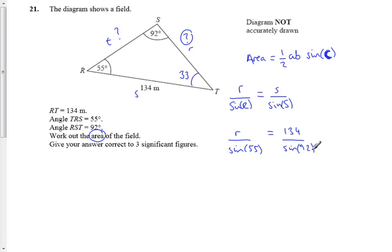And now I just need to rearrange this equation, so it tells me that little r is equal to 134, multiplying through by sine 55, or divided by sine 92. So I need to work that out on my calculator. So, let's do this. So what have we got? So we're just tapping into a calculator, divided by 92.